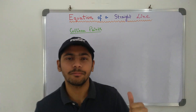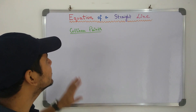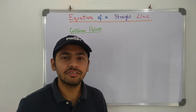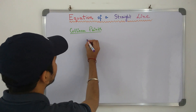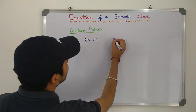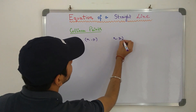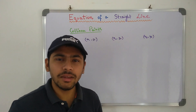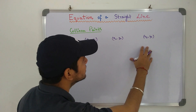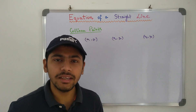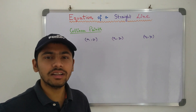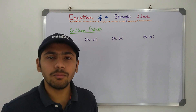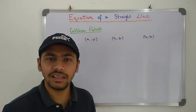Without further ado, let's dig in. First of all, let's discuss Collinear Points. What are Collinear Points? If I have three points given — x1y1, x2y2, and x3y3 — it simply means that all these three points lie on a single straight line. It is as simple as that. Collinear Points lie on a single straight line.